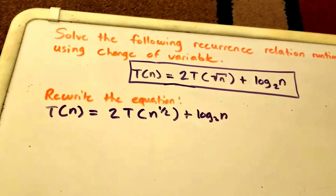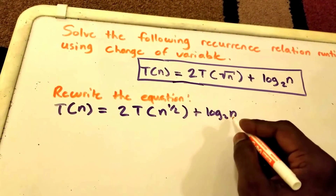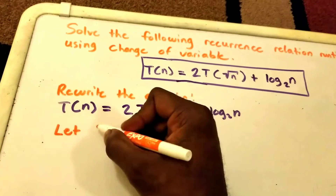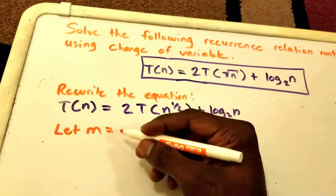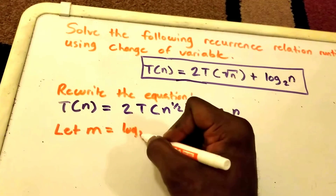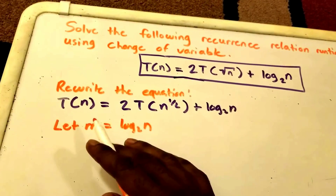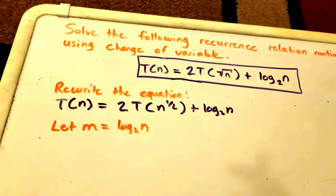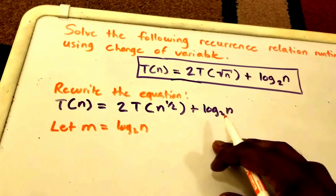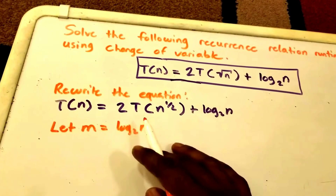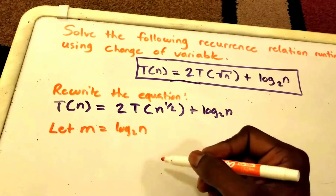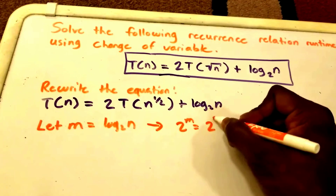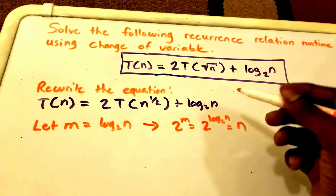Next, I don't like this log base 2 of n, so what we're going to do is let some variable — we'll call it m — equal log base 2 of n. That way we can get rid of the log₂(n) term, but we need to put the whole equation in terms of m as well. This implies that 2^m = 2^(log₂(n)) = n.